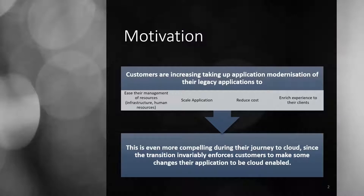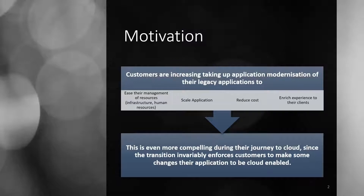Industries have these legacy applications which are monoliths, which means that all the functionality is packaged together and for any small update, the whole application needs to be deployed. This means that the speed of deployment gets very slow. Any small change or small feature rollout itself needs a lot of planning and a release cycle.